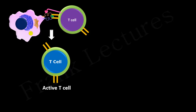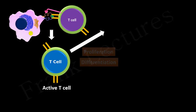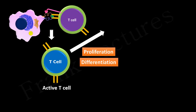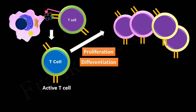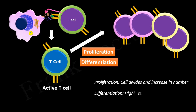Once activated, the T-cell undergoes proliferation and differentiation in response to that antigen. Proliferation means the cell divides several times and increases in number. Differentiation is the process by which more highly specialized cells are formed. The resulting T-cells now have the ability to recognize the same antigen as the original lymphocyte. These cells are known as effector cells.